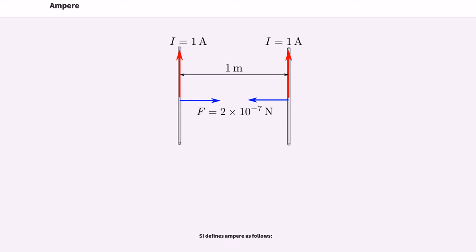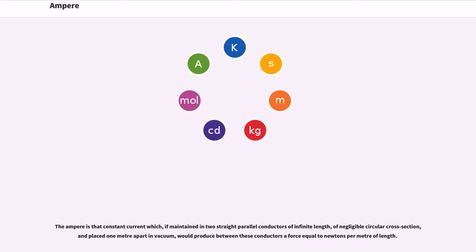SI defines ampere as follows: The ampere is that constant current which, if maintained in two straight parallel conductors of infinite length, of negligible circular cross-section, and placed one meter apart in vacuum, would produce between these conductors a force equal to 2×10^-7 newtons per meter of length.